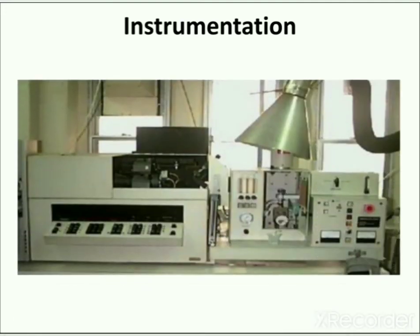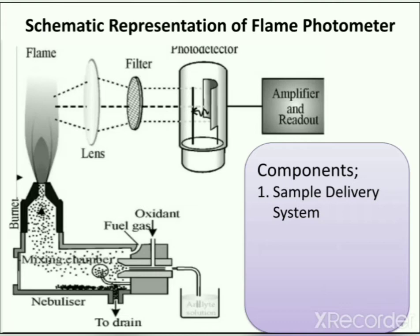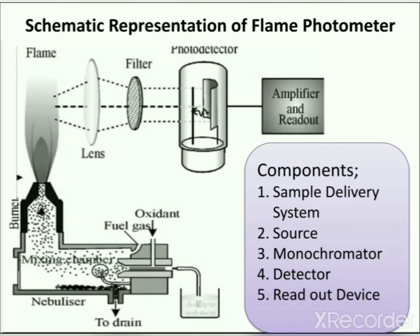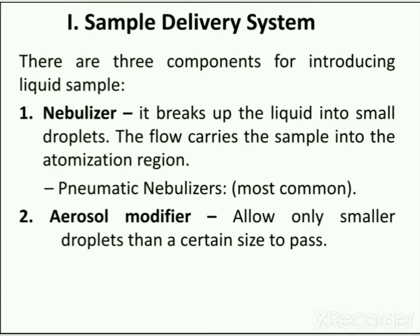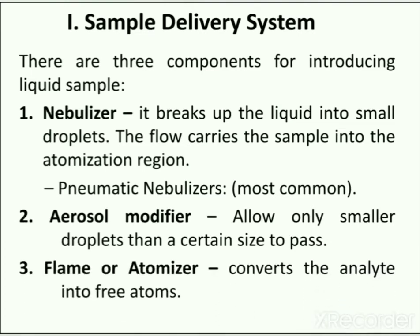A flame photometer is composed of a sample delivery system, source, monochromator, detector, and readout device. The sample delivery system has three components for introducing a liquid sample into the flame: the nebulizer, the aerosol modifier, and the flame or atomizer. The nebulizer breaks up the liquid into small droplets; nebulization is the process of conversion of a sample to a mist of finely subdivided droplets using a jet of compressed gas, and the flow carries the sample into the atomization region. The most commonly used nebulizers are pneumatic nebulizers. The aerosol modifier removes large droplets and allows only small droplets below a certain size to pass, while the flame or atomizer converts the analyte into free atoms.